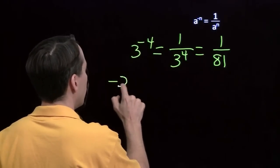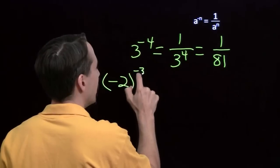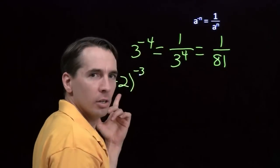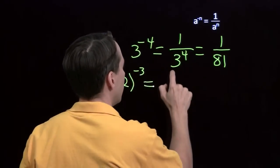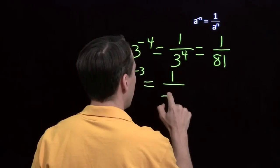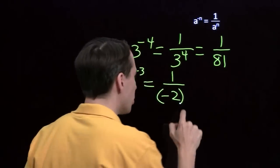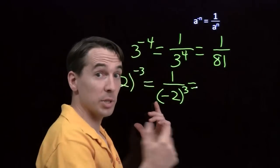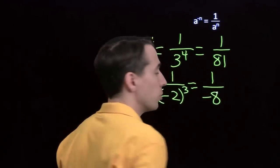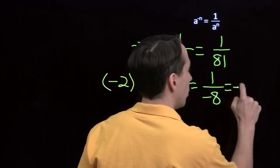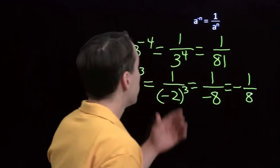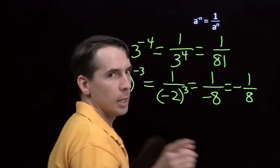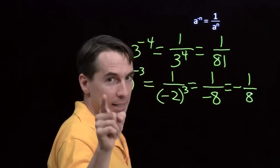Let's try one more: negative 2 to the negative 3 power. There's nothing special about a having to be positive, so we can use a negative number for a. We just use our rule: stick in negative 2 for a, and we see that negative 2 to the negative 3 is just the reciprocal of negative 2 raised to the 3rd power. Negative 2 times negative 2 times negative 2 gives us negative 8, so this is the reciprocal of negative 8, which is negative 1 over 8. The rule works when a is positive, when a is negative — but it doesn't work when a is 0, because you can't take the reciprocal of 0.